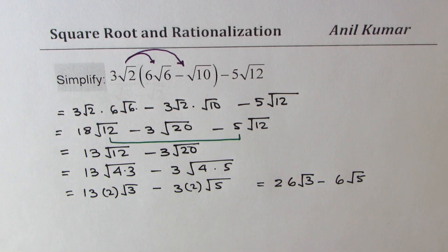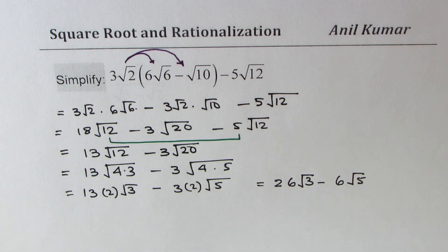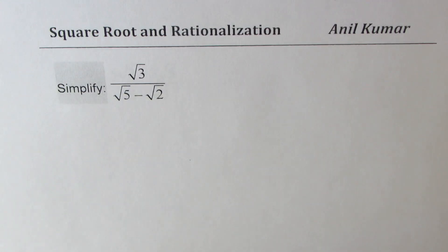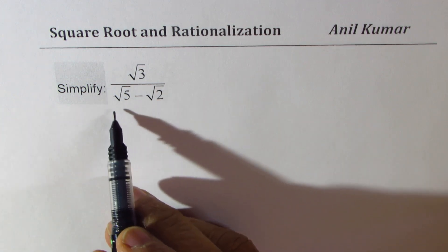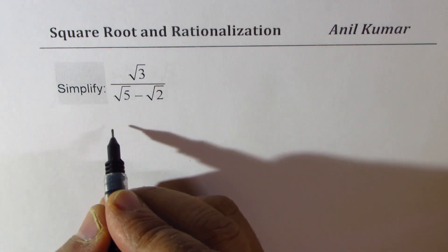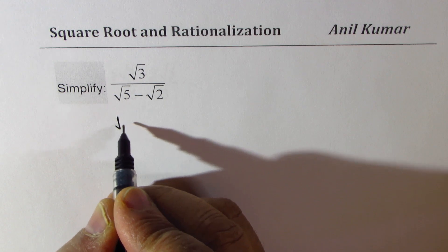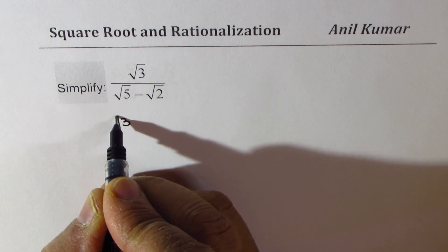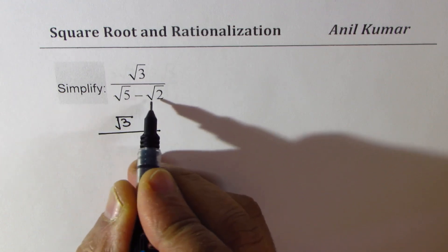Now let's look into rationalization. We need to simplify √3 over (√5 − 2). To rationalize we multiply and divide by the conjugate of the denominator.